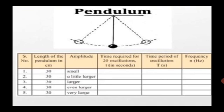The time period of oscillation depends on the length of the pendulum. The time period of oscillation increases if the length of the pendulum is increased. The frequency remains the same even if the amplitude decreases or increases.